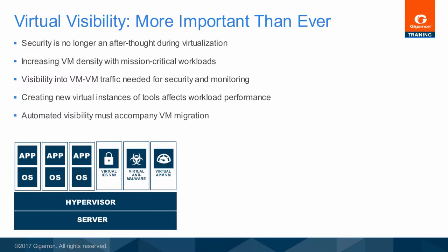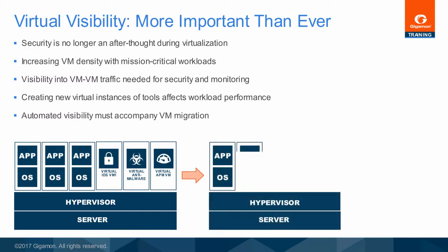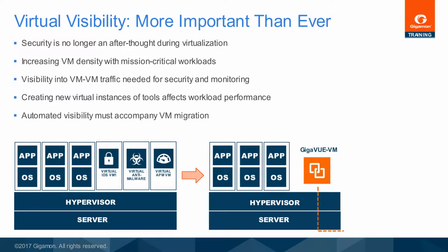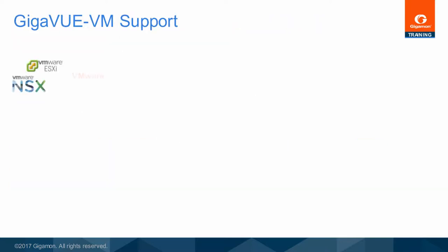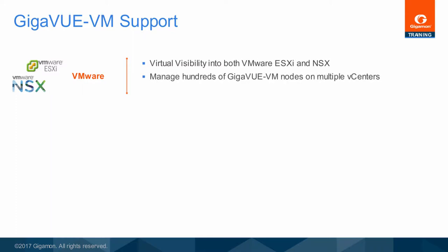Rather than creating a separate tool deployment and profile for each hypervisor, instead link traffic from that hypervisor and workload into the existing security and monitoring profiles through a traffic access profile, and then use the existing rules and profiles without special efforts to accommodate for virtualization. GigaView VM is able to support both ESXi and NSX VMware hypervisors, monitor workload from multiple vCenters and hundreds of GigaView VMs on different hypervisors, with automatic traffic policy migration when vMotion events take place.